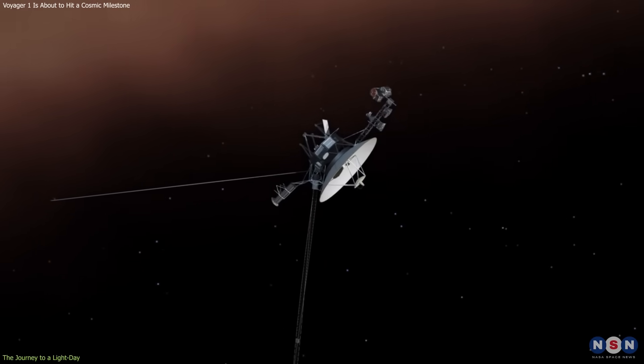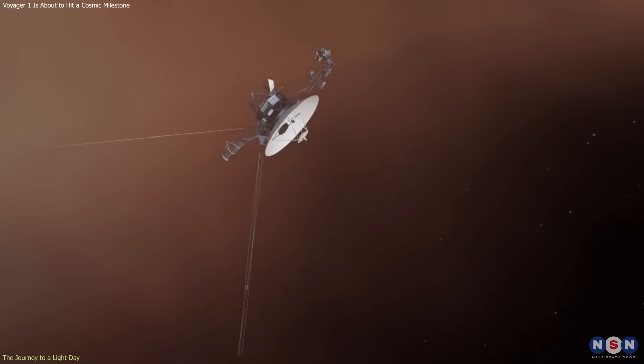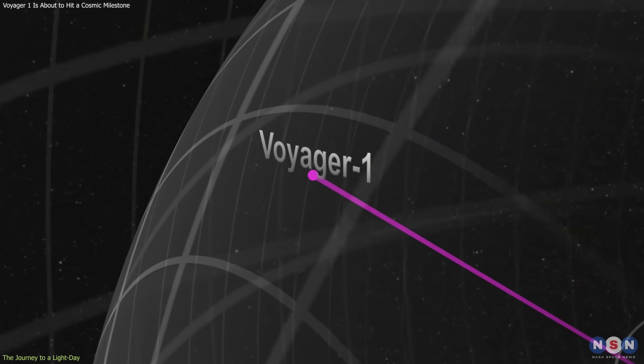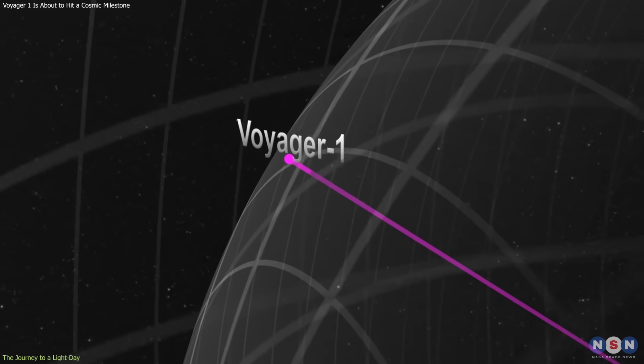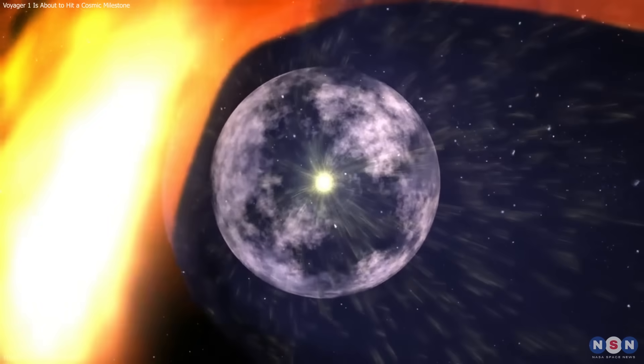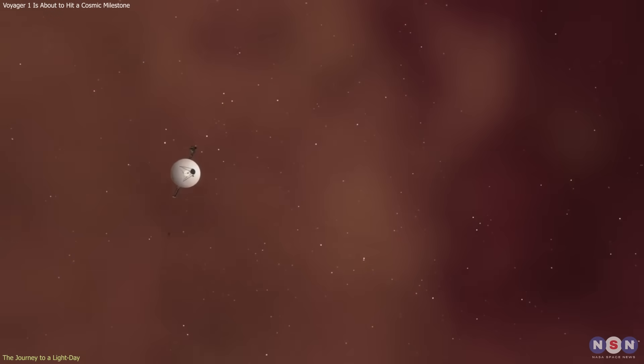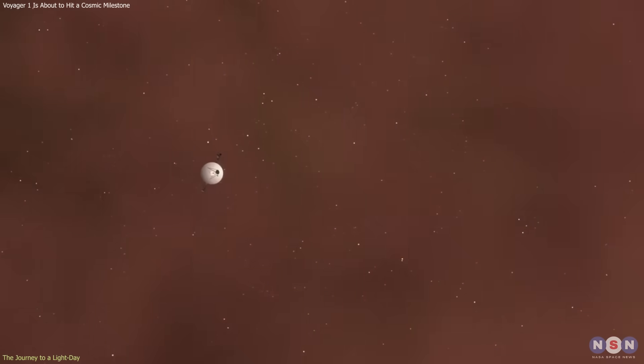Over the decades, this steady motion carried Voyager 1 into unexplored territory. In August 2012, it crossed the heliopause, the outermost boundary where the solar wind gives way to interstellar space. That moment marked humanity's first step beyond the sun's influence.